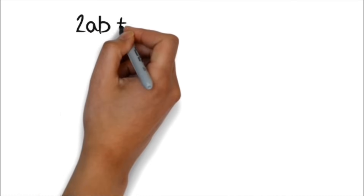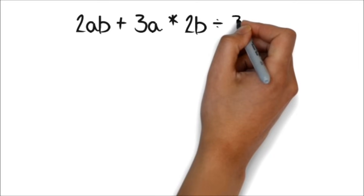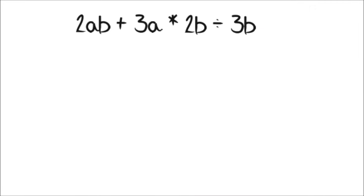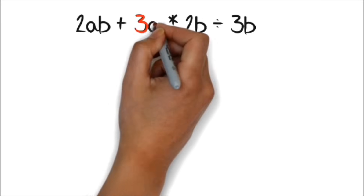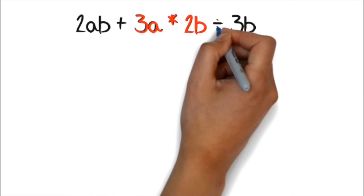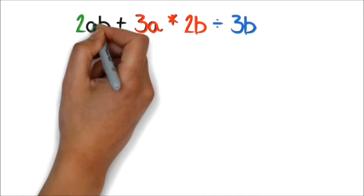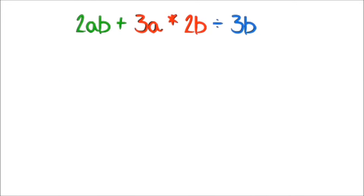Let's look at a more detailed problem. When we have 2ab plus 3a times 2b divided by 3b, we know we have to do the multiplication and division first from left to right. We will work on the 3a times 2b first, then we divide by 3b, then we add our answer to 2ab.